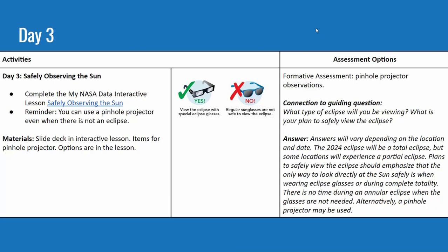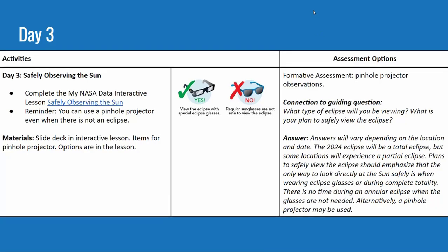Day three is all about safely observing the eclipse. There's an interactive activity that people can do online, and directions for making pinhole projectors with a couple of different options. The connection to the guiding question is what type of eclipse will you be viewing and what is your plan to safely view it? Since the annular eclipse is already over, it will be a total eclipse in 2024, or a partial eclipse if not in the path of totality. Plans should include either a pinhole projector or safe eclipse glasses.